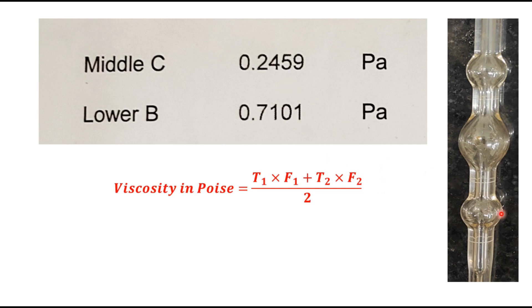For lower bulb, this is 0.7107 and for the middle bulb, this is 0.2459 and let us say time taken by the bitumen to flow from this mark to this mark is T1 and from this mark to this mark it is T2 and these are the calibration factor F1 and F2. Then viscosity in poise is the average of these two values.